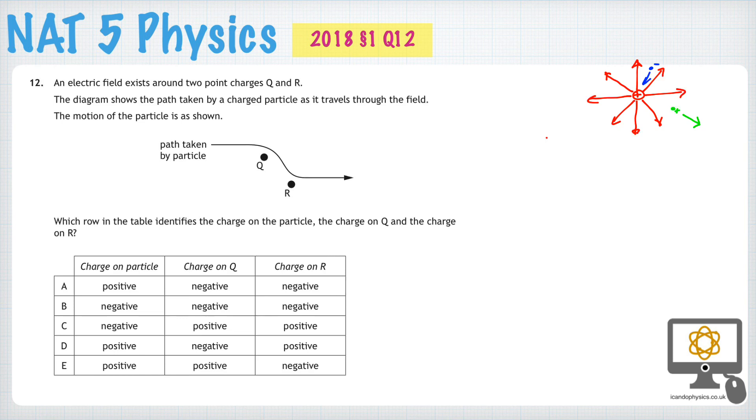The opposite is also true. If we have a negatively charged particle, it's going to have electric field lines traveling inward toward the charged particle.